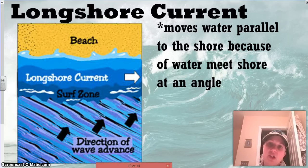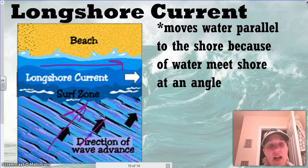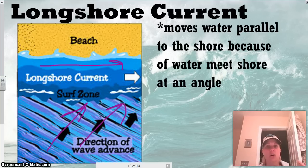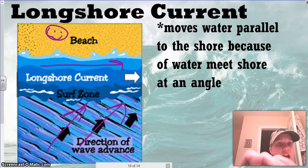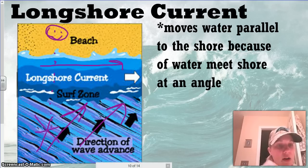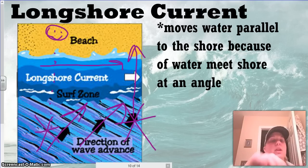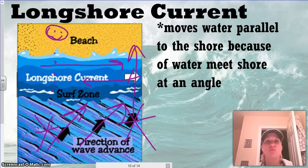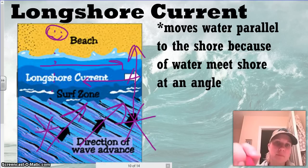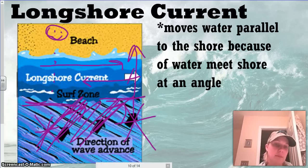A longshore current is a current that's moving parallel to the beach, and this is where the waves are coming in at an angle. You've had this happen before if you've ever been to the beach, and let's say mom parks herself right here, and you go out and play in the water right here. You're playing and playing, and all of a sudden you look up and you're all the way down here, and mom's not there anymore. You've actually shifted down the beach because of the longshore current. As these currents are building, this is actually shifting sand, which can build up sandbars along the shoreline.